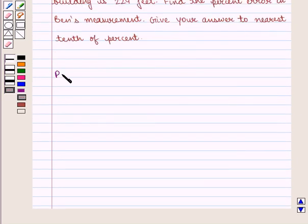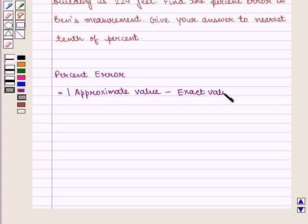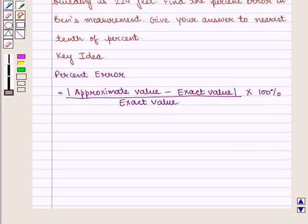We know that percent error is equal to the modulus of approximate value minus exact value, divided by exact value, times 100%. With this key idea, let us proceed to the solution.